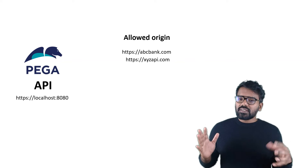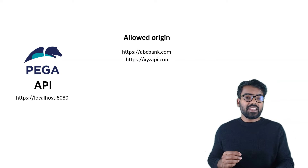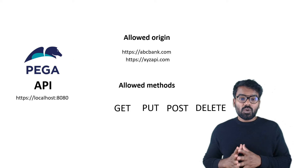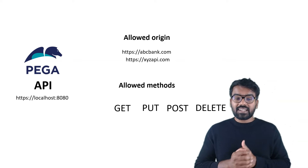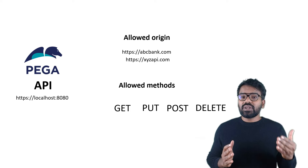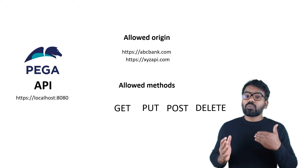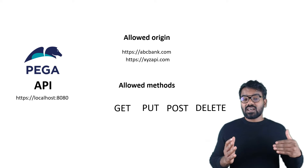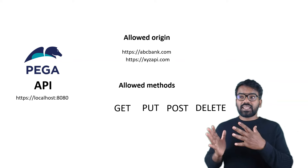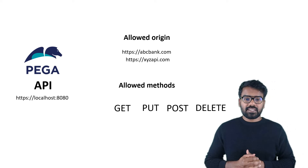In addition to origin, we can also have more restrictions specifying the allowed HTTP methods. I can also control that by saying my resource cannot execute a DELETE method. I can only allow certain methods — for example, you can use only the GET method.